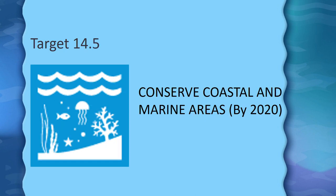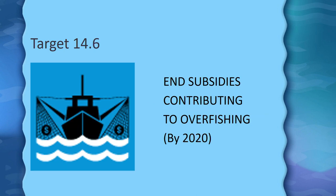Target 14.5: Conserve coastal and marine areas, also by 2020. We need to conserve at least 10% of coastal and marine areas consistent with national and international law. Target 14.6: End subsidies contributing to overfishing, by 2020. People overfish and sometimes use harmful substances to attract fish, which contributes to overfishing.